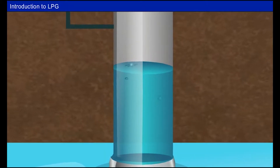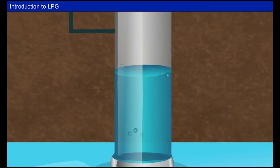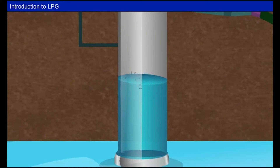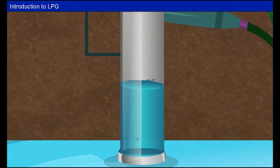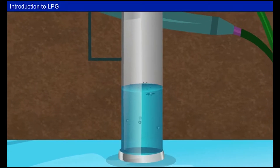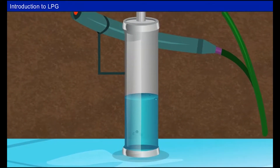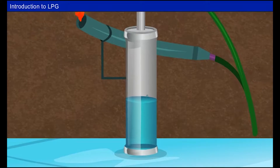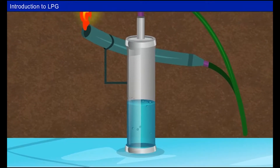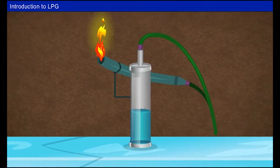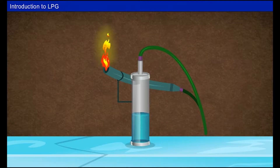Whenever a liquid boils, we just think it is hot. But this liquid boils and it is not hot because it is kept on a cake of ice. This liquid boils, vaporizes and produces gas, and that gas burns. This unusual liquid is nothing but petroleum gas.